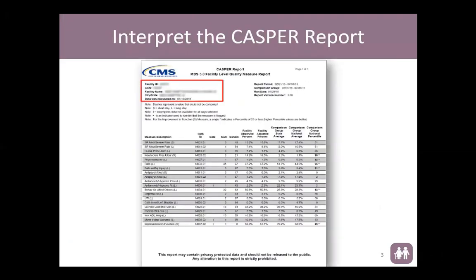This is a screenshot of a CASPER report for the facility-level quality measures. The top left-hand side shows you the facility ID number, the CMS certification number or CCN, your facility name, the city, state, and the date that the data was calculated on.